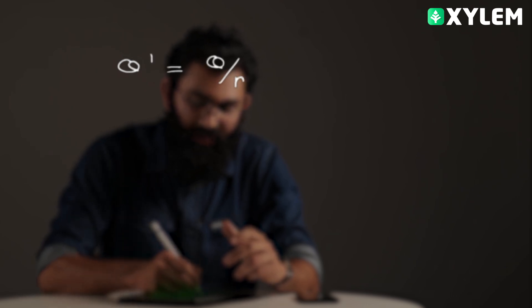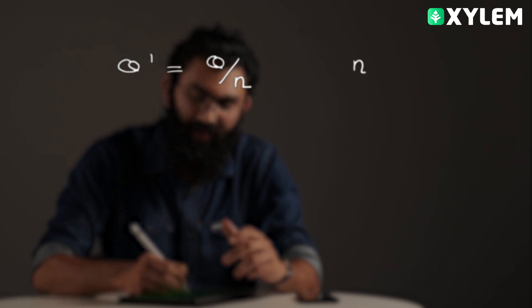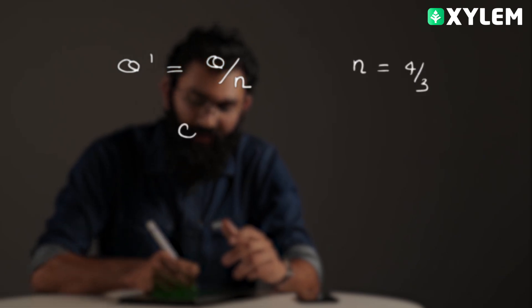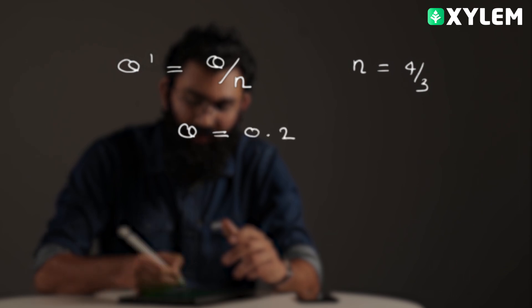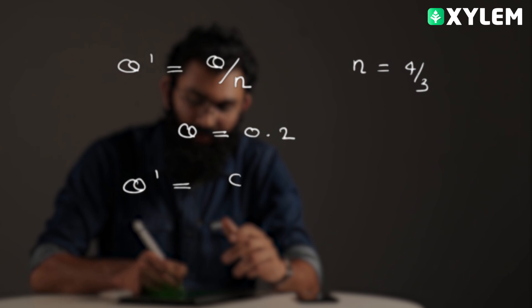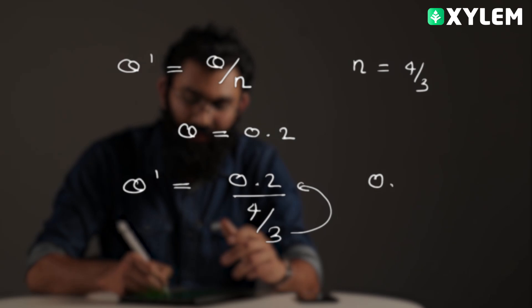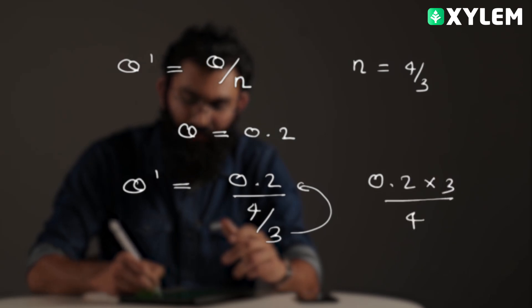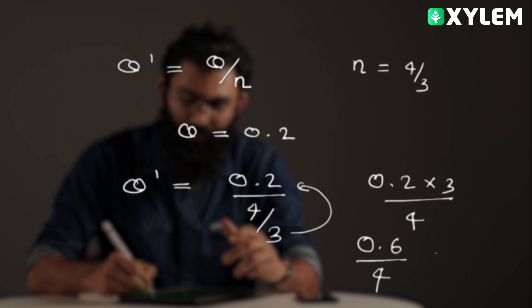So, we know that normally the angular width in air equals 0.2 degrees. Divided by the refractive index: 0.2 into 3 divided by 4, which gives 0.6 divided by 4. So, the answer is 0.15 degrees. That is option D.